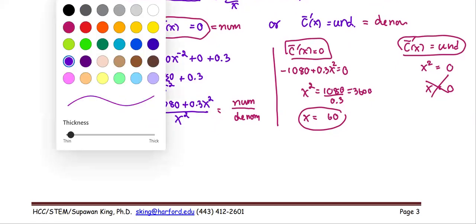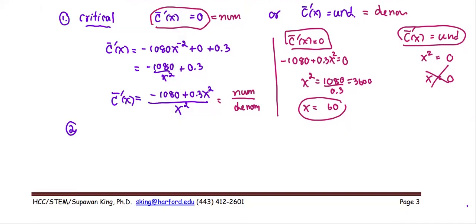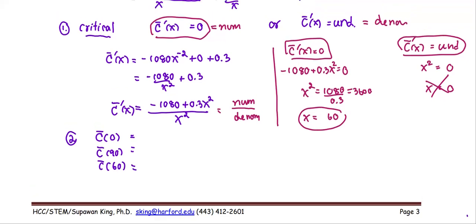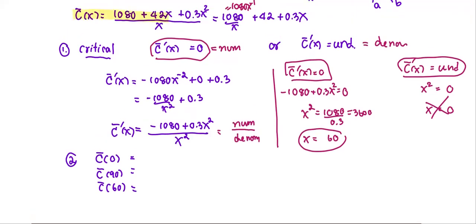Step two: compute the average cost function C̄ at the left endpoint, the right endpoint, and the critical value 60. At x = 0, C̄ is undefined, so that value is out. At x = 90: C̄(90) = 1080/90 + 42 + 0.3(90) = 81.